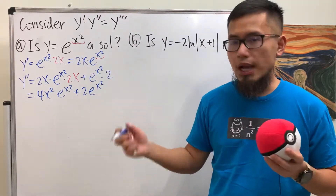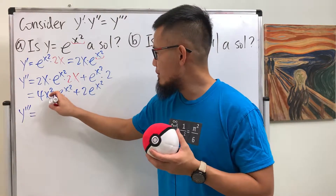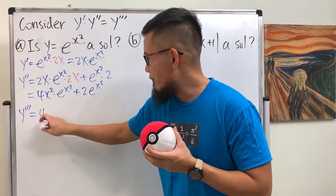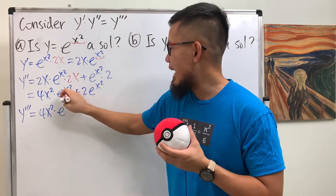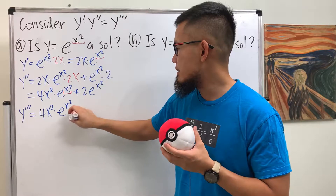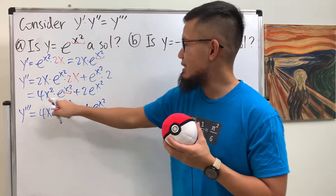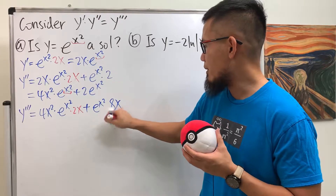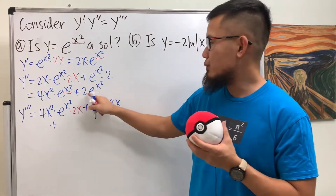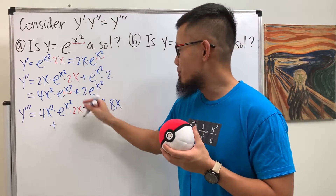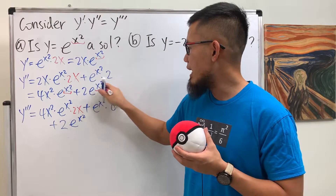Now we differentiate one more time for y triple prime using the product rule. Keep the first function 4x squared, multiply by the derivative of e to the x squared which gives e to the x squared times 2x, then add e to the x squared times the derivative of 4x squared which is 8x. Don't forget the remaining term: 2 times the derivative of e to the x squared is 2 · e to the x squared times 2x.